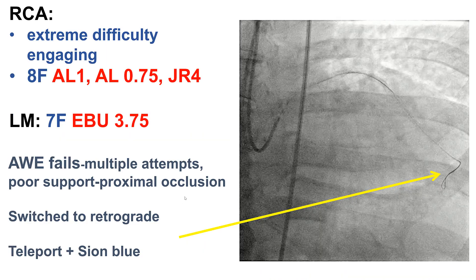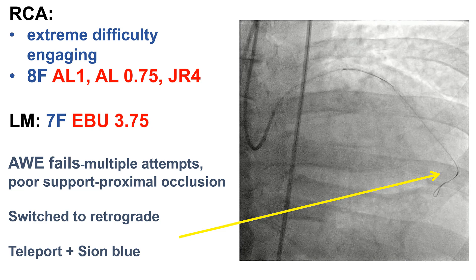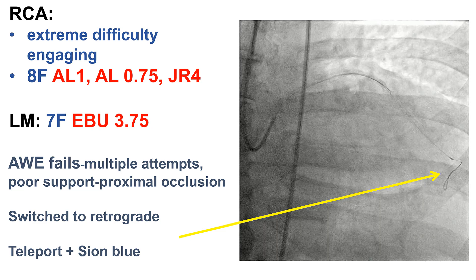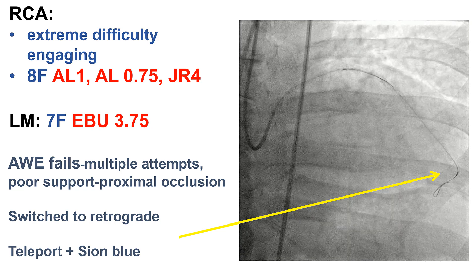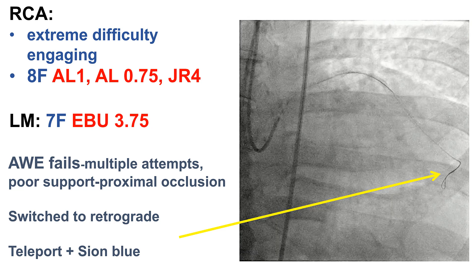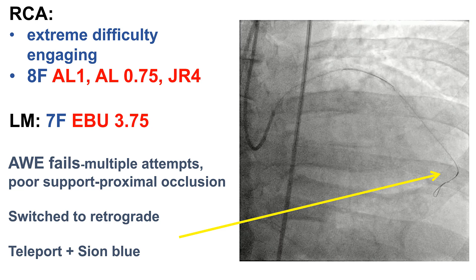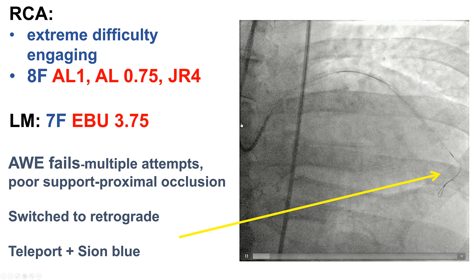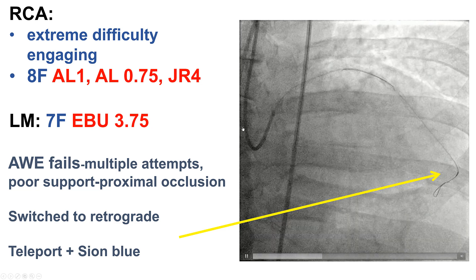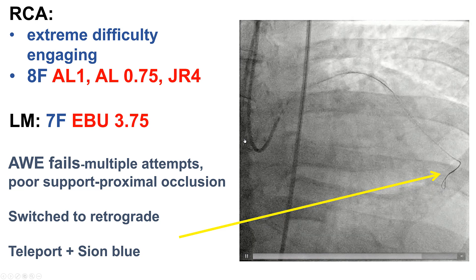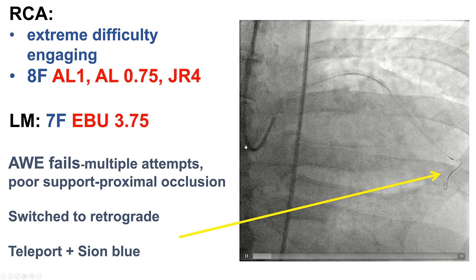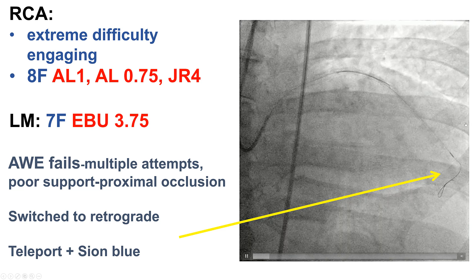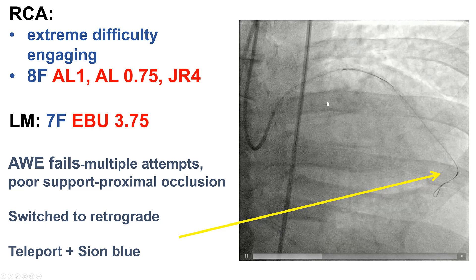We encountered extreme difficulty engaging the right coronary artery. We had 8 French femoral and 7 French radial access. Despite using multiple guide catheters including AL1, AL.75, and ZR4, we had a lot of difficulty engaging the right. After multiple attempts, we decided to switch to the retrograde approach through the epicardial collateral.